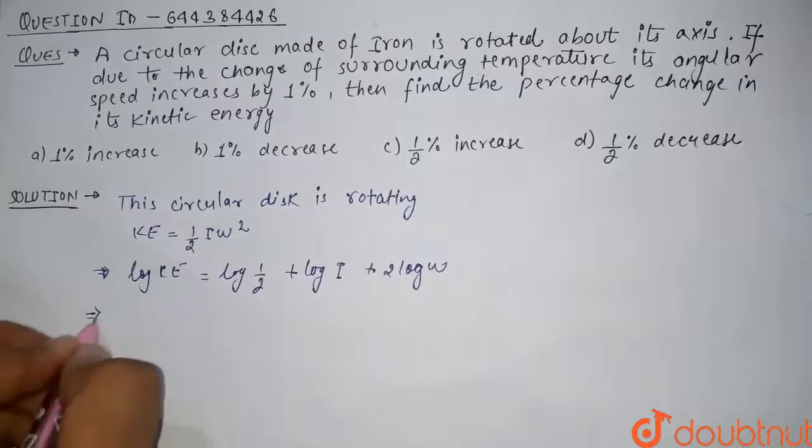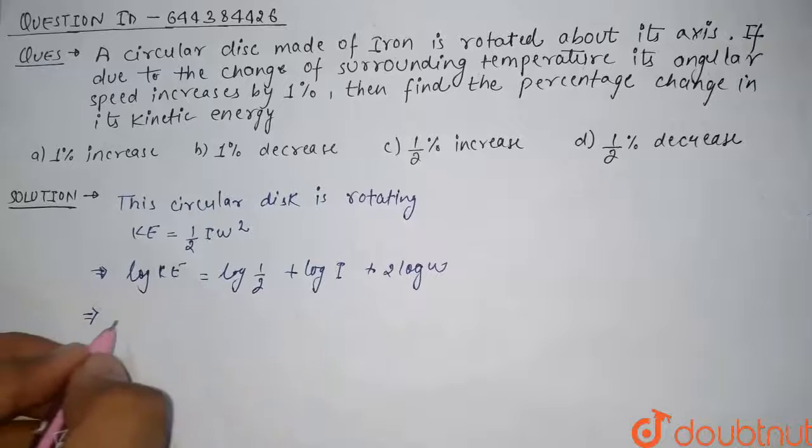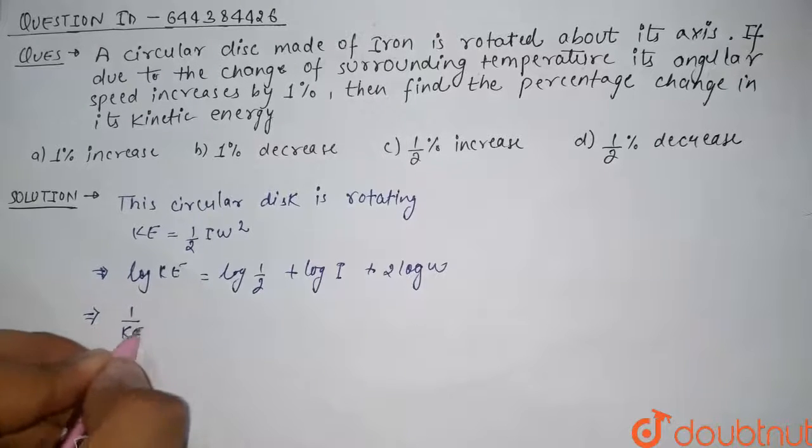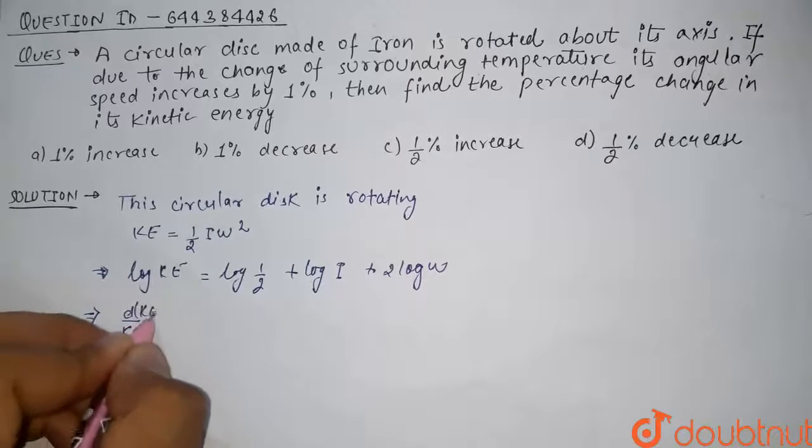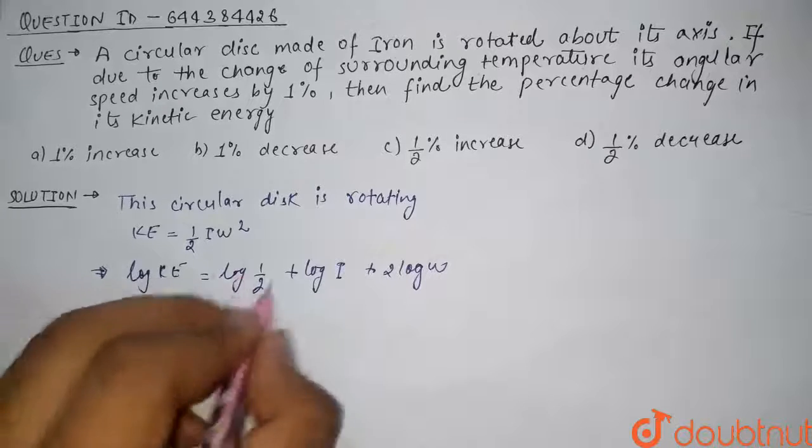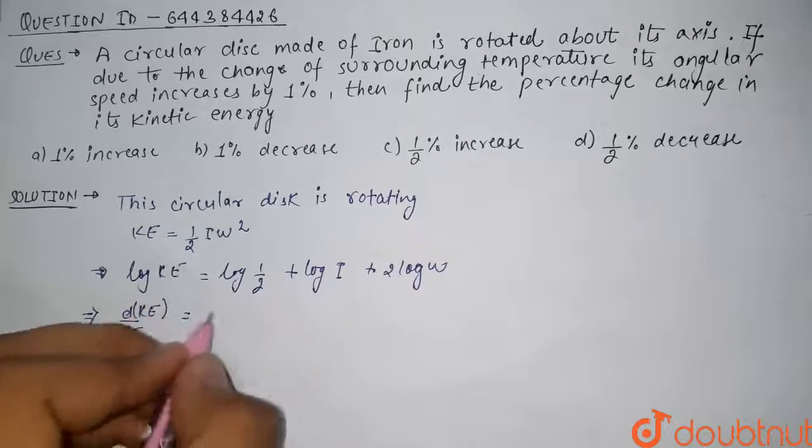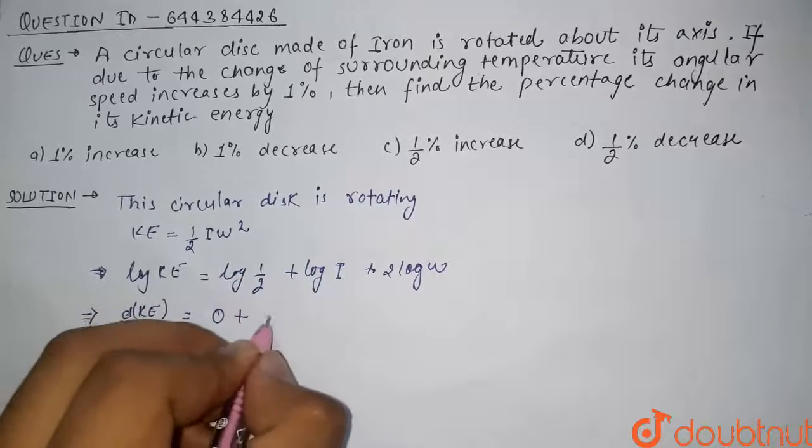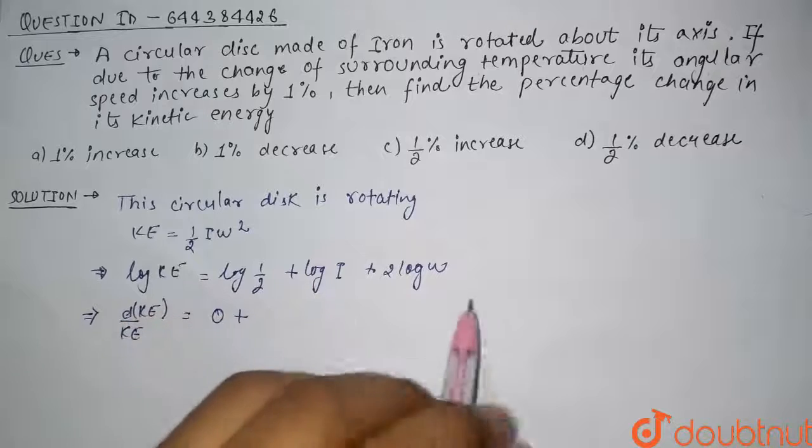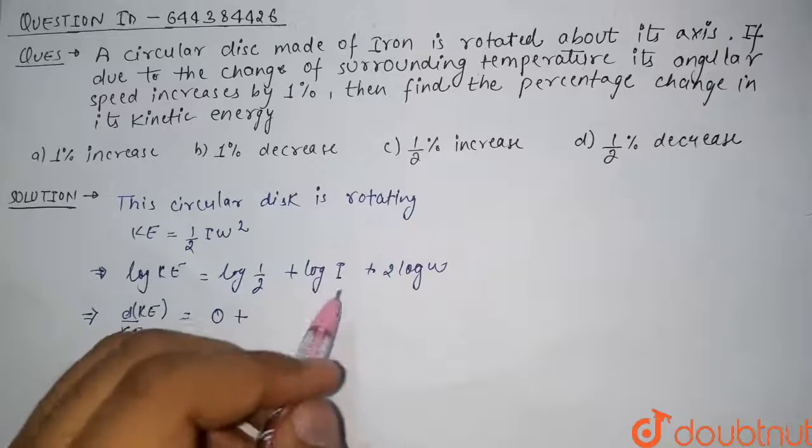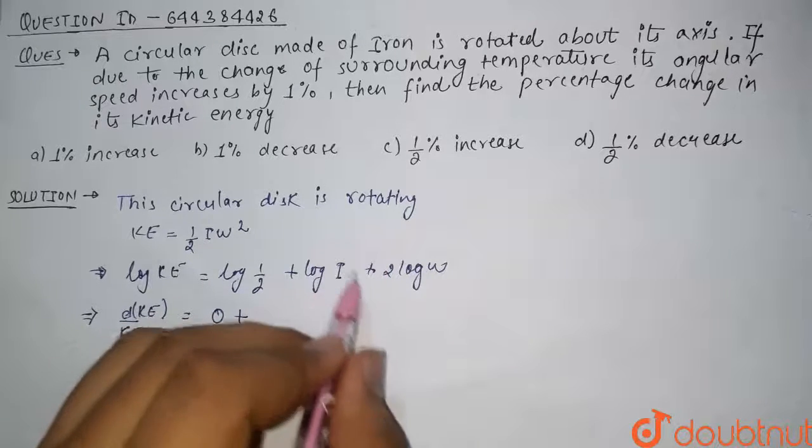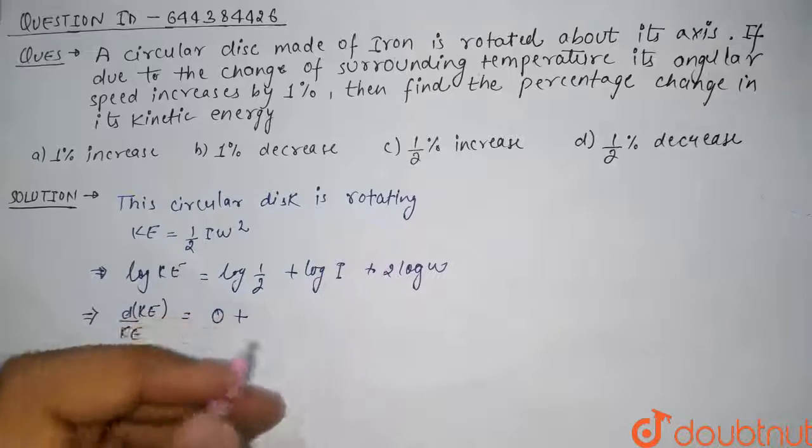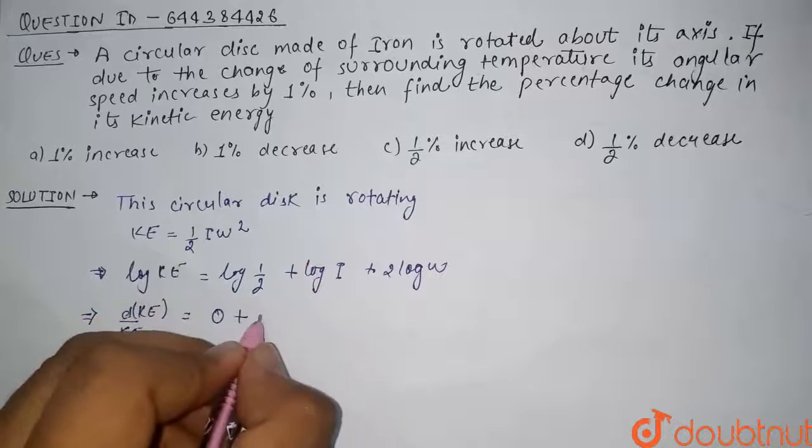Now we will differentiate all these terms. So it will become 1 by KE times dKE equals, since this is a constant term, its differentiation will be 0. Plus log I, because there is no change in moment of inertia, so it is also constant and its differentiation will also be 0.